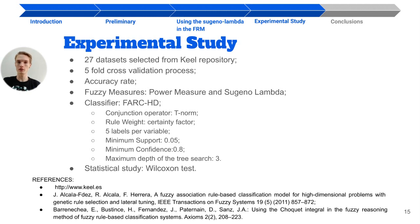Here we have the configuration of it, for example, 5 layers per variable, minimum support of 0.05, minimum confidence of 0.8, the maximum depth of 3, and we also carried a statistical study using the Wilcoxon test.